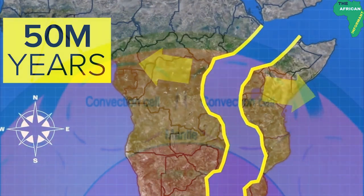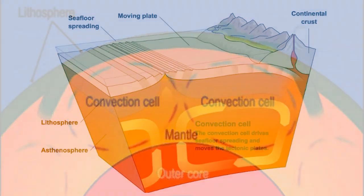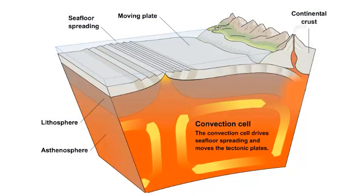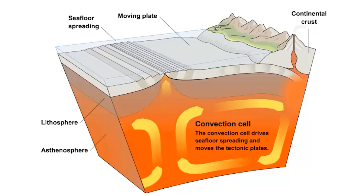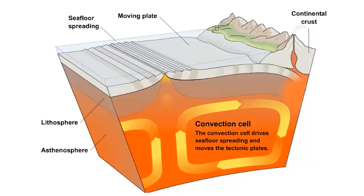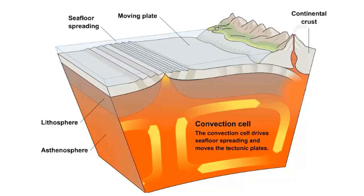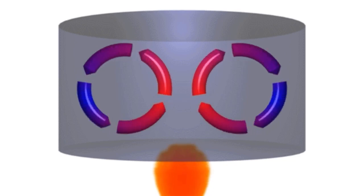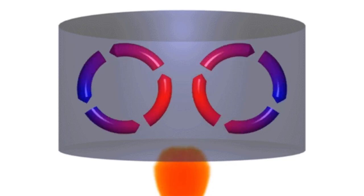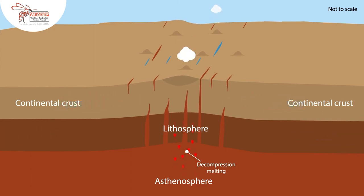To understand why plates move apart, we need to look under the Earth's crust. Beneath the surface there's a layer called the mantle. It's like a huge, slow-moving ocean of semi-molten rock. This rock isn't completely solid — it moves in slow motion currents called convection currents. Think of it like boiling water, how the water moves in circular patterns. That's what's happening in the mantle. These currents are powerful enough to push and pull the massive tectonic plates that float on top.